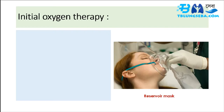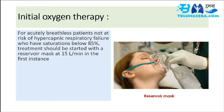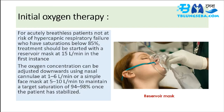Initial oxygen therapy for acutely breathless patients not at risk of hypercapnic respiratory failure who have saturations below 85%: treatment should be started with a reservoir mask at 15 liters per minute. The oxygen concentration can then be adjusted downwards using nasal cannulae at 1 to 6 L/min or a simple face mask at 5 to 10 L/min to maintain a target saturation of 94 to 98% once the patient has stabilized.